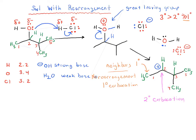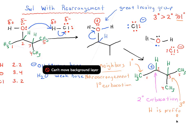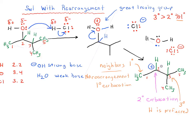No rearrangement to carbon one, because that would give us a primary carbocation. On the other hand, if we look at the other neighbor — this is a tertiary carbon, attached to three carbons. We could migrate a CH₃ or a hydrogen, but remember that hydrogen migration is preferred over CH₃. So we're only going to consider migration of the hydrogen. If we migrated this hydrogen — or hydride, because we're taking the pair of electrons — this would give us a tertiary carbocation. Tertiary is more stable than secondary, so this rearrangement is allowed. There is a driving force for this rearrangement.